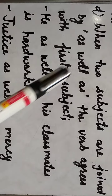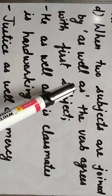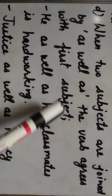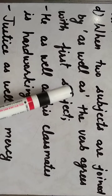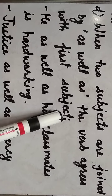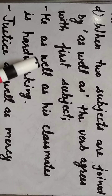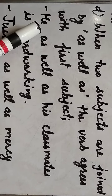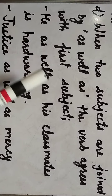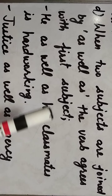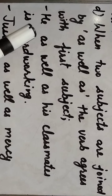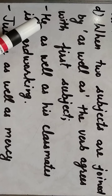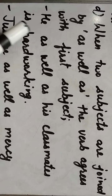Next rule is for 'as well as.' When two subjects are joined by 'as well as,' the verb agrees with the first subject. 'He as well as his classmates is hard working.' यहाँ 'he' first subject है जो singular है, इसलिए 'is.' अगर 'his classmates as well as he' होता, तो classmates plural है तो 'are' आता। As well as से पहले जो first subject हो, उसके according verb लगानी है।